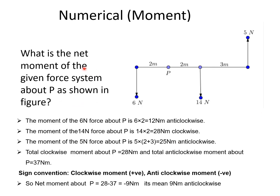Now a numerical to understand how we determine the moment of any force system. The problem asks: what is the net moment of the given force system about point P? Forces of 6 Newton, 14 Newton and 5 Newton are acting. First, the 6 Newton force is downward and P is the reference point. The moment is force into perpendicular distance: 6 Newton times 2 meters equals 12 Newton meters.